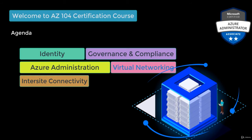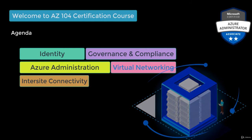How do you connect your on-premise network to the network you created in Azure? There are different ways: you can use a VPN connection or an Express Route, and you can use VNet peering to connect one virtual network with another virtual network in Azure. We'll talk about the limitations and explore this with hands-on lab activities.